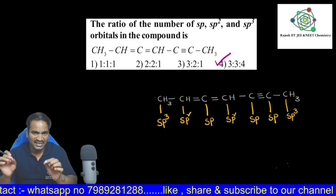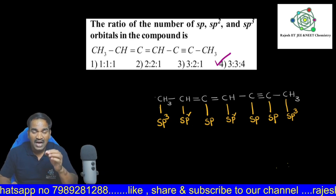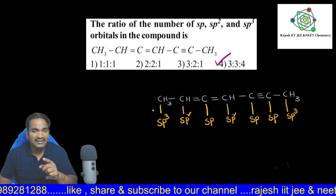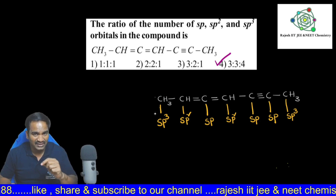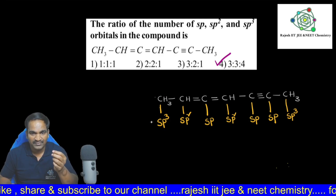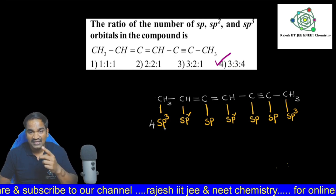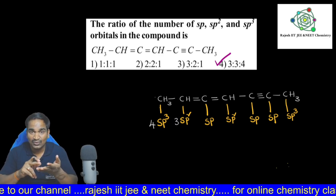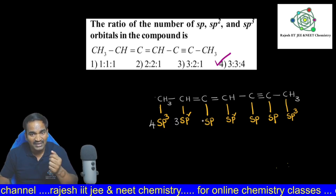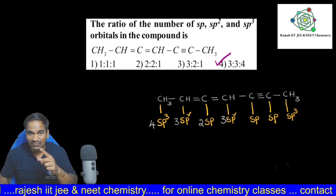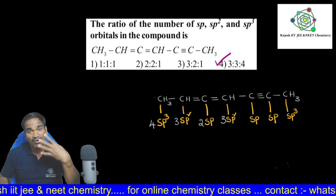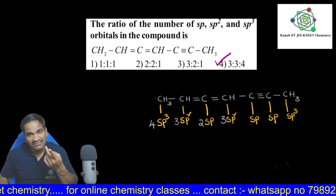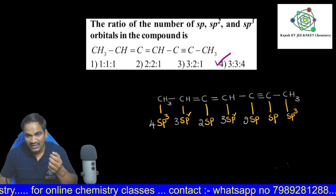Now we have written each carbon atom's hybridization for the given hydrocarbon. Here, how many hybrid orbitals each carbon contains — that matters. Always remember: if the carbon atom hybridization is sp3, four sp3 orbitals will form. If you take sp2, three sp2 orbitals will form — because one p orbital doesn't hybridize. For sp, two sp orbitals will form.